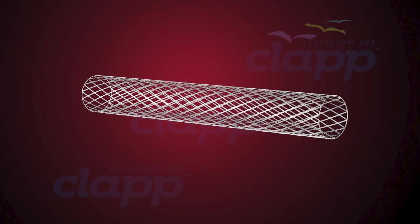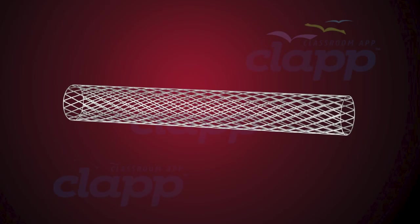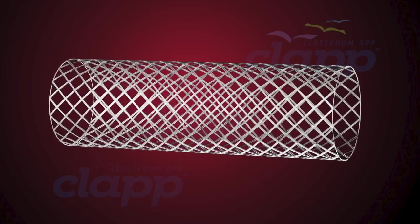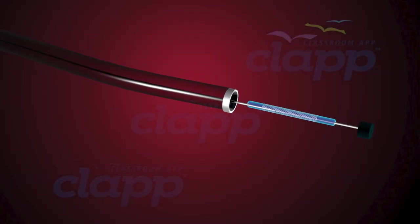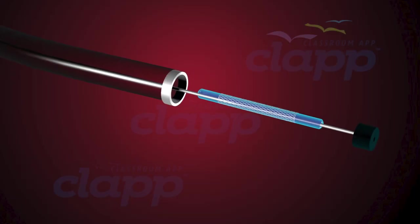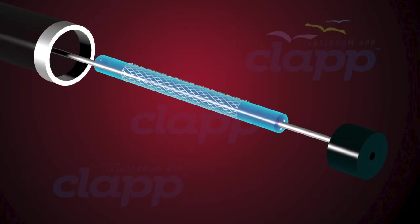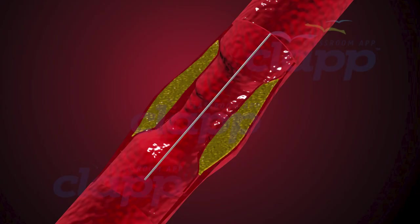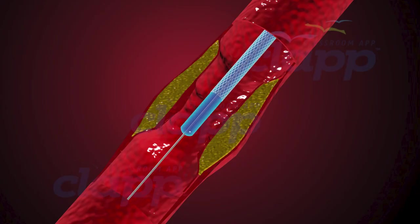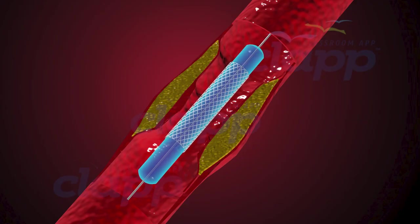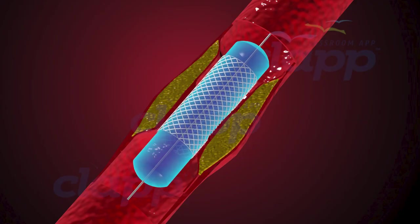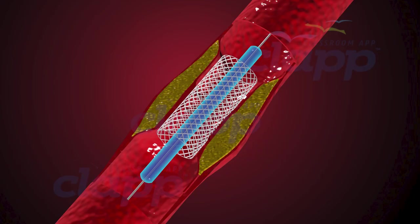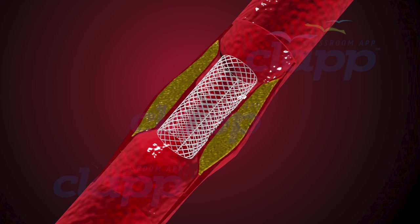A stent is a tiny mesh tube inserted in the affected area, acting as a supportive structure to keep the artery open. A stent catheter delivers and deploys the stent. After compressing the plaque against the artery walls using the balloon catheter, the stent is introduced and placed in the affected position. This tiny mesh tube is expanded within the vessel, acting as a scaffold to prevent re-narrowing and maintain proper blood flow. Medicines applied on the stent will prevent re-accumulation of plaque in that area.